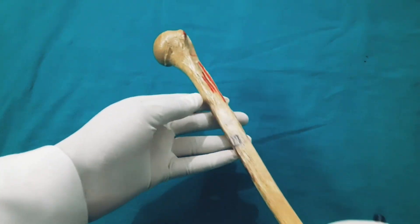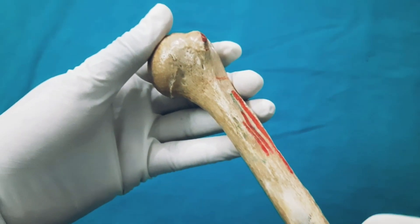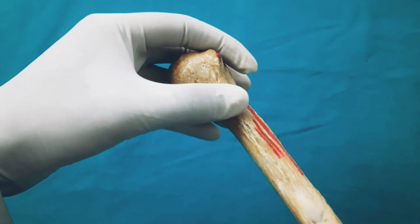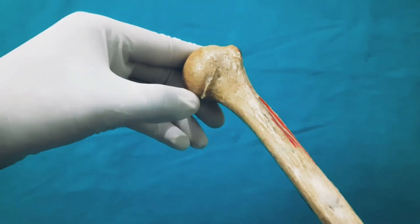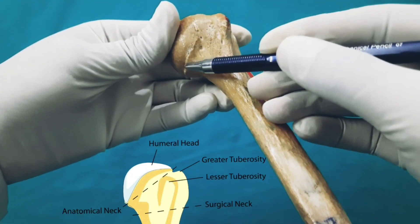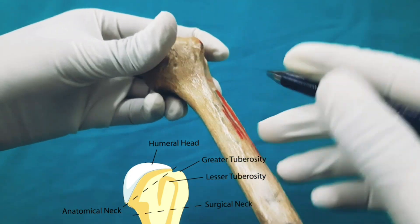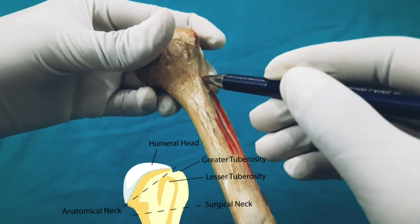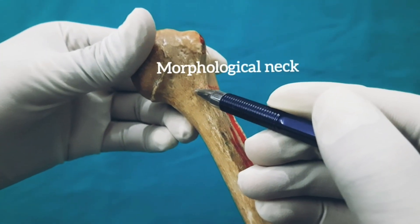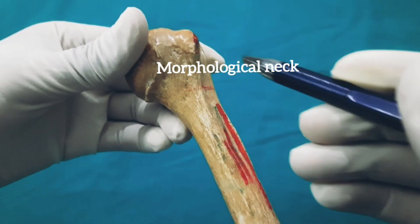Before proceeding to muscular attachments, let us learn a few additional features of the humerus. At the proximal end, the head of the humerus is separated from the rest of the upper end by a line known as the anatomical neck. The upper end is then separated from the shaft by the surgical neck. Recent literature also mentions the morphological neck, which is approximately 0.5 centimeters above the surgical neck and demarcates the epiphysial line of the humerus.